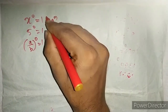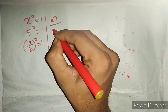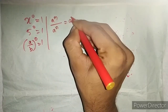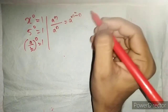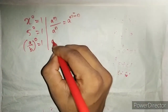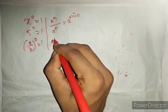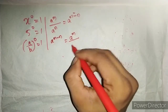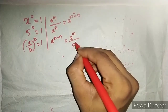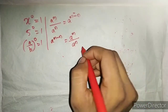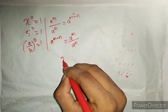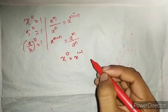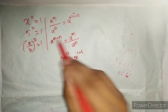a raised to m divided by a raised to n equals a raised to m minus n. In this case, a raised to m minus n; a raised to m divided by a raised to n. So x raised to 0 is x raised to 1 minus 1.